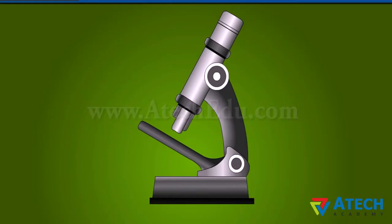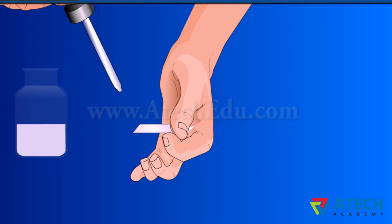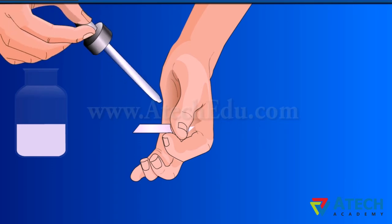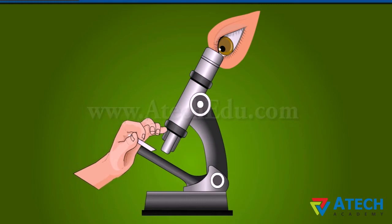Cells are studied with the help of a microscope. Microscopes are high resolution instruments used for observing the fine details of very minute objects. A specimen like the inner fleshy leaf of an onion bulb is taken on a glass slide. A drop of iodine solution is put on it and a cover is placed. The slide is then observed under a microscope. Light reflected from the mirror reaches the object and a magnified image of the sample is seen.